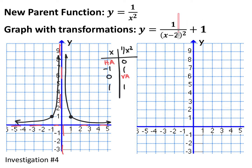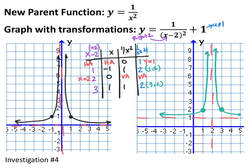Now try graphing y equals 1 over (x minus 2) squared plus 1 using transformations. The transformations being done on the 1 over x squared graph are shifting up 1 and right 2. I took all of my y-coordinates and added 1. This shifts your horizontal asymptote up 1 as well, but it does not affect your vertical asymptote, because an infinitely long vertical line shifted up 1 won't go anywhere.